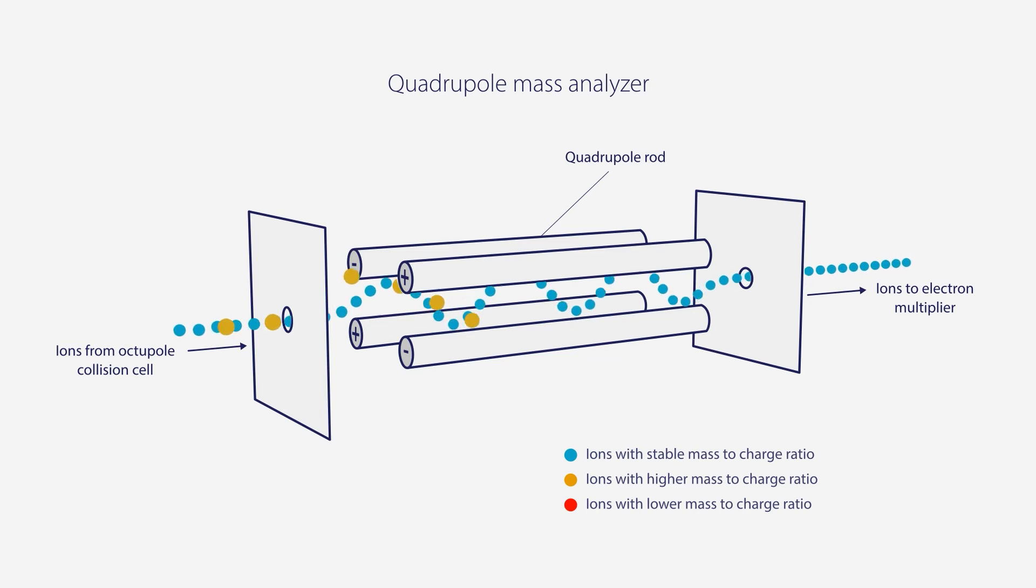Ions with higher or lower mass to charge ratios will have unstable trajectories through the quadrupole and either collide with the rods or exit the region between the rods and be removed by the turbopump. Ions with unstable trajectory do not reach the detector.